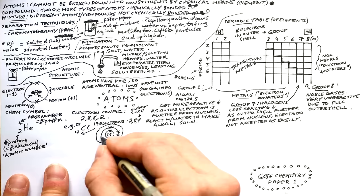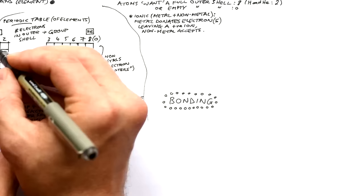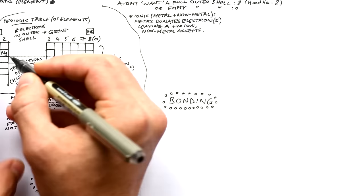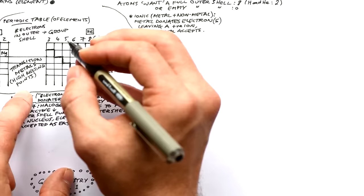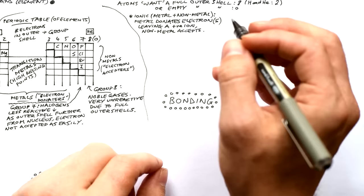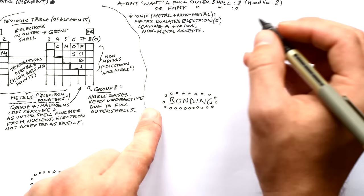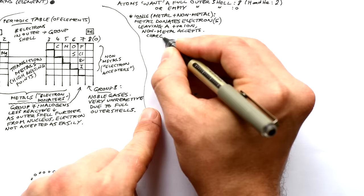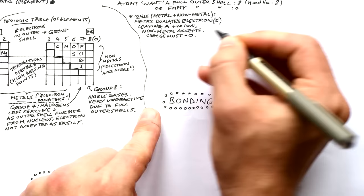Generally we just draw the outer shell of an atom. Atoms want either a full or empty outer shell — that means eight or zero electrons (two for hydrogen and helium). Atoms achieve this by bonding. Metals bond to non-metals through ionic bonding — the metal donates one or more electrons, becoming a positive ion, and the non-metal accepts them, becoming a negative ion. The overall charge must still be zero.